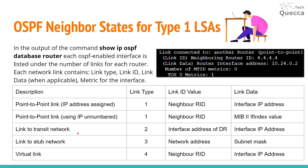Link to transit network — link type 2, link ID is the interface address of the DR, and link data is the interface IP address. Link to stub network — link type 3, the network address for the link ID value, and the subnet mask for link data. And the last one, virtual link — link type 4, neighbor router ID, and interface IP address for link data.